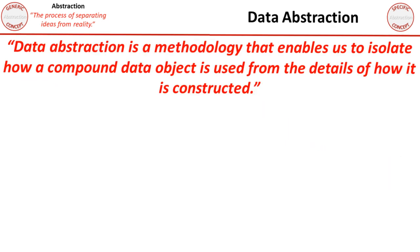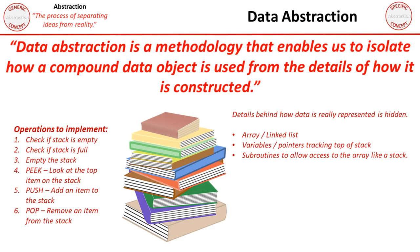The third type of abstraction you need to know about is data abstraction. Data abstraction is a methodology that enables us to isolate how a compound data object is used from the details of how it's actually constructed under the hood. So let's imagine the data type of stack. We know that as long as the data structure has methods and code associated with it that allows us to perform these operations on it — check if the stack is empty, check if it's full, empty the stack, look inside the stack, and push and pop items to and from the stack — then it doesn't really matter how the actual stack is coded and implemented behind the scenes. The details of how this data is really represented is abstracted or hidden.